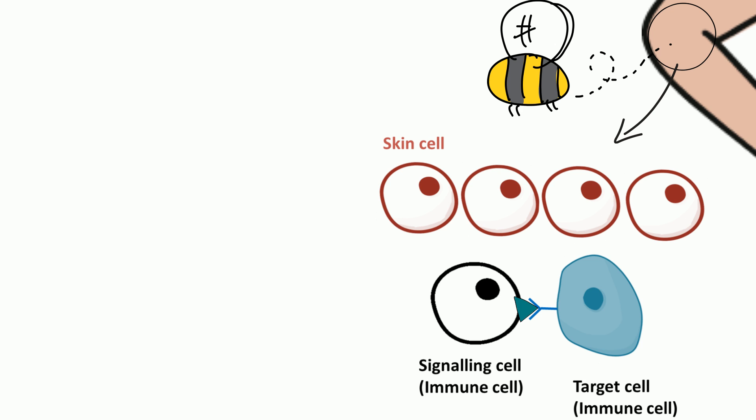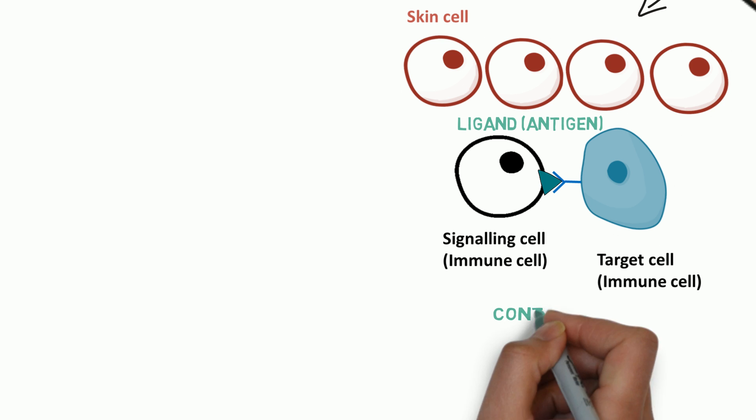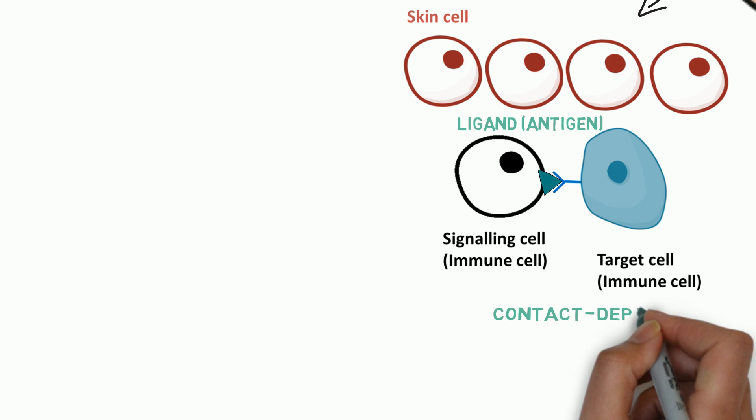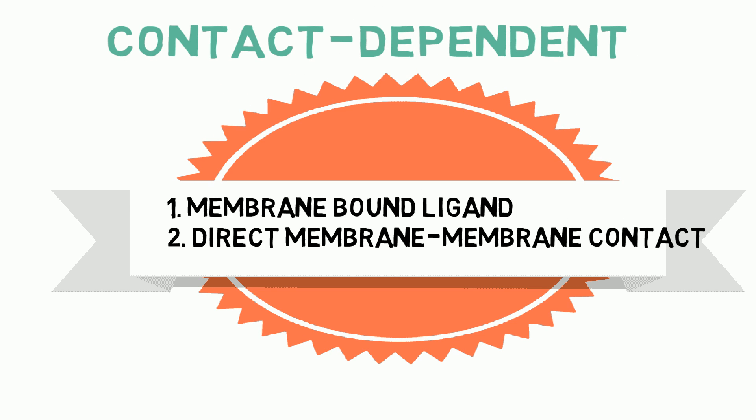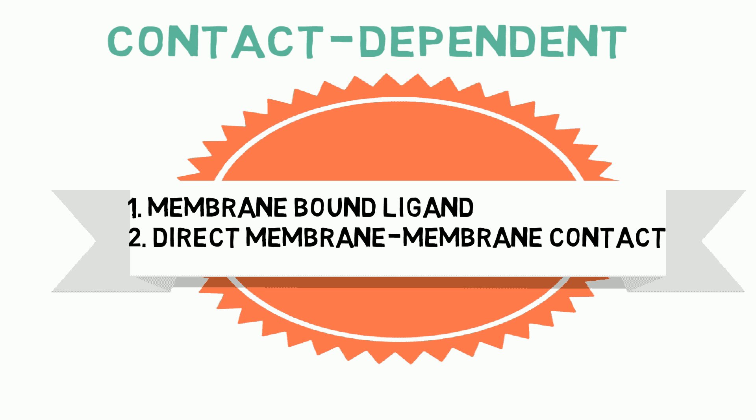The signaling cell is the antigen-presenting cell and the antigen is the ligand. The ligand interacts directly with the receptor of the target cell, which in this case is another type of immune cell. The immune response is initiated by contact-dependent signaling, where the ligand is membrane-bound and the cells are in direct membrane-membrane contact.